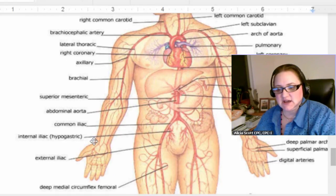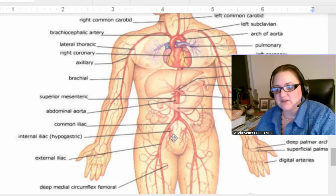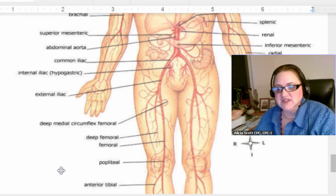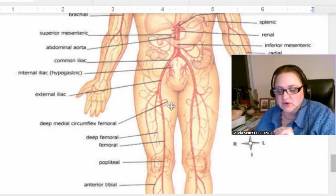Let's see, abdominal aorta, the common iliac. Remember I talked about the iliac crest of the pelvis and internal iliac, external iliac. Now, this vein right here, very important, you'll hear a lot about it. The femoral artery, deep femoral, deep medial circumflex, this little loop right here.